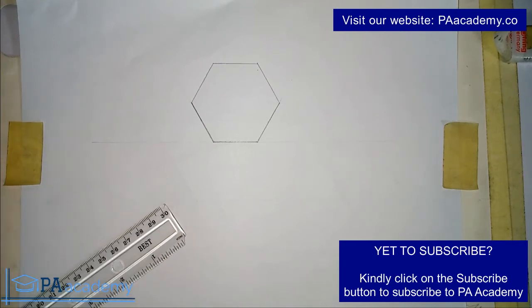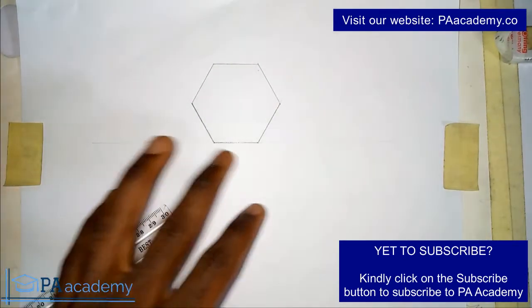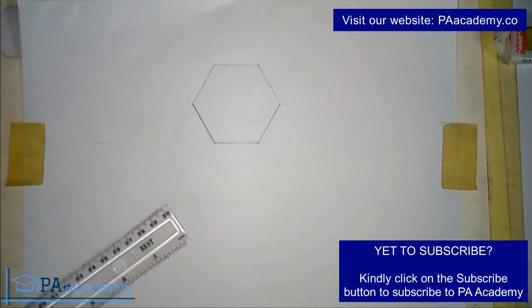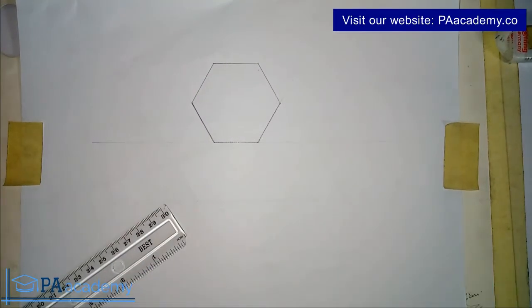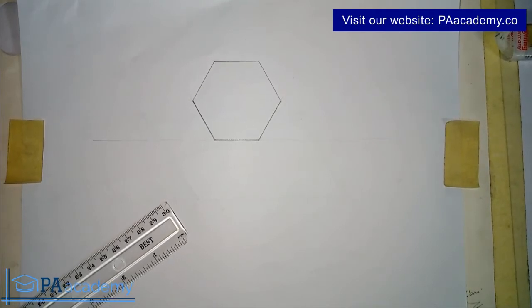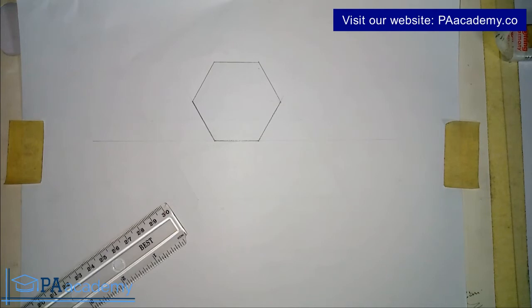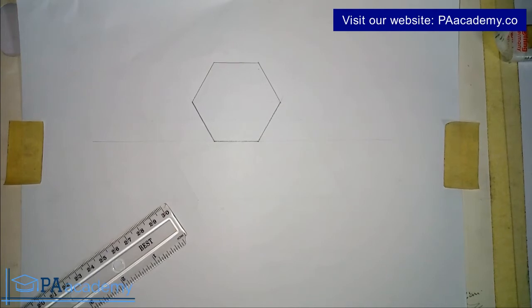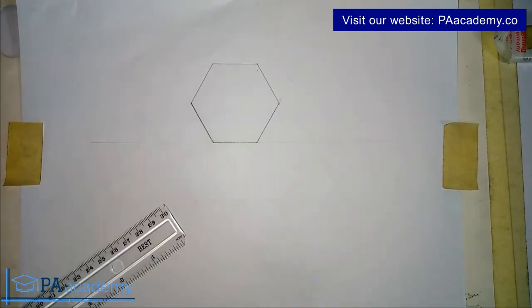So in demonstrating this, I'm going to be using a regular hexagon. Now I've drawn the hexagon just to save time, but if you don't know how to draw a hexagon or other regular polygon, just check the playlist on technical drawing. You'll find the videos showing you how to draw different types of regular polygons with different methods. Alright, so let's get back into this.